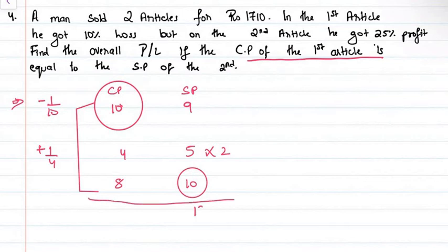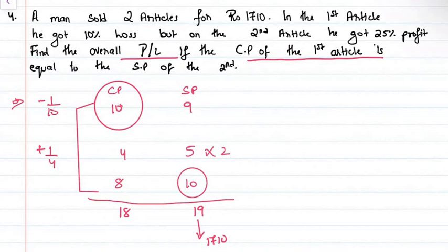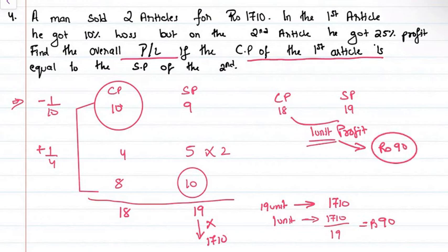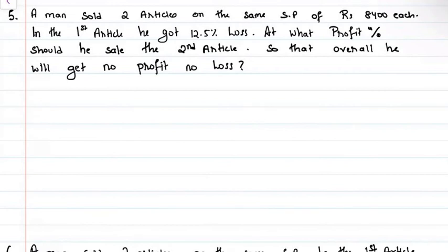Total: first article selling price 9, second article selling price 10, so total selling price is 19 units. Cost prices are 10 and 8, total cost price is 18 units. Total selling price 19 units equals Rs.1710. So 1 unit equals Rs.90. Overall profit is 1 unit, so overall profit is Rs.90.